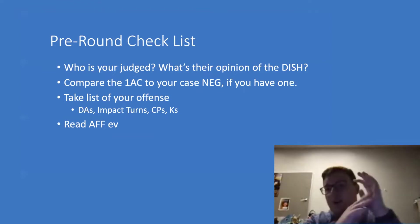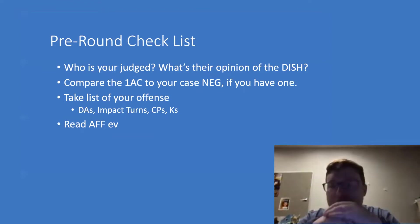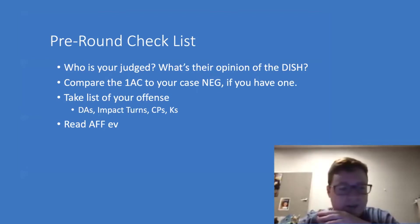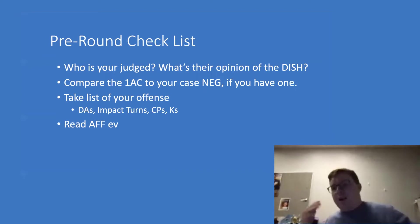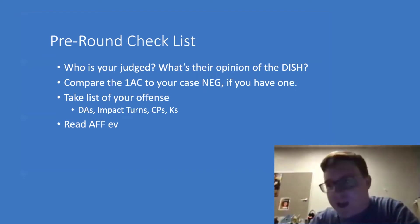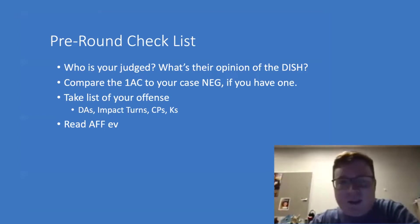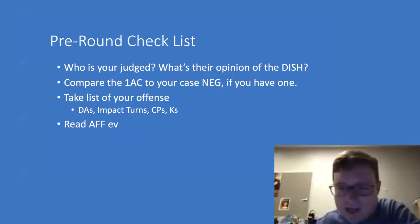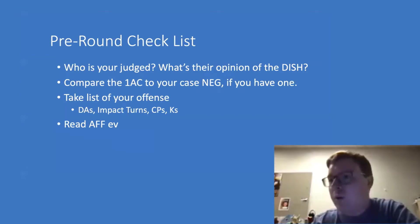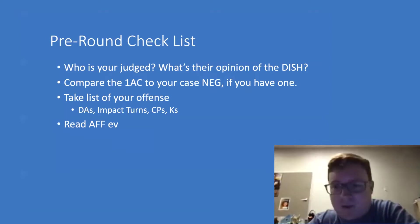You should incorporate fiat into your pre-round checklist. When you go into a round, you get the aff, you look it up on the wiki, and you start looking at your case neg and taking into account your arguments — what critique do you have, what topicality arguments, do you have a specific pick, a specific counter plan, et cetera. The conversation we're going to have is all predicated on who is your judge and what's their opinion on conditionality.